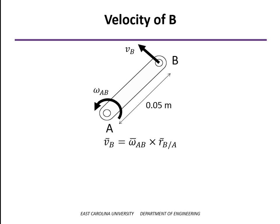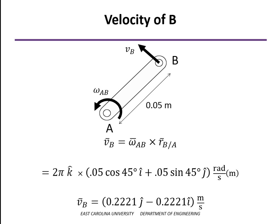The velocity of point B is the cross product of the angular velocity vector and the position vector. When we cross k cross i, we get positive j. When we cross k cross j, we get negative i. The magnitude of both components are the same because the cosine and sine of 45 are the same. So 2 pi times 0.05 times the cosine of 45 is 0.222, positive j direction, negative i direction.